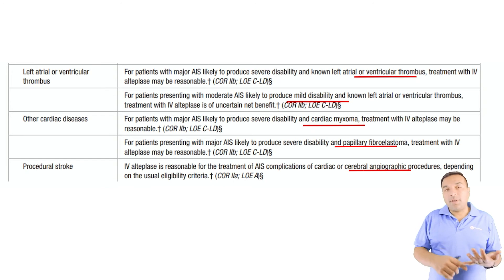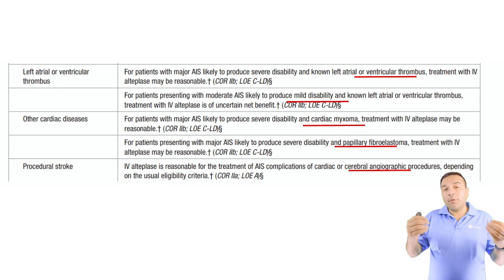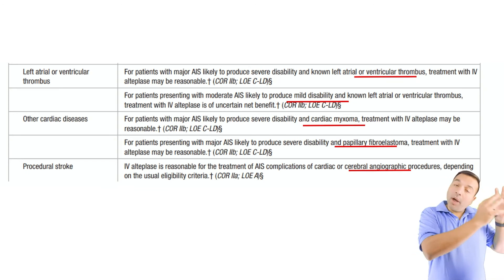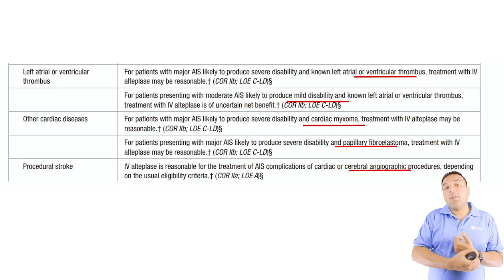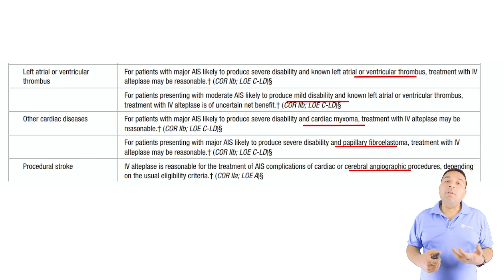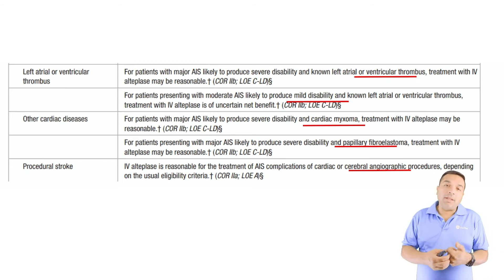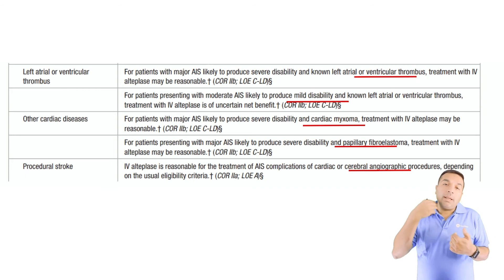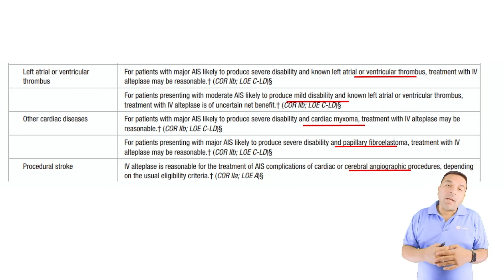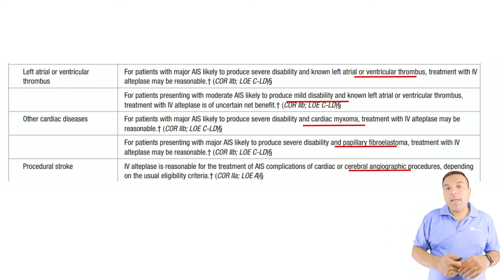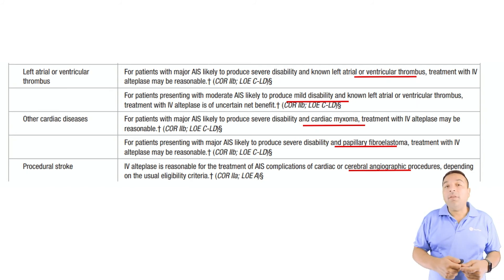For procedural strokes — for example during cerebral angiography or cardiac catheterization — even if the patient was heparinized for the procedure, I've given protamine and then given TPA. These patients can do very well. These are often posterior circulation strokes due to artery-to-artery embolism while the catheter moves through the aortic arch, causing vertigo, nystagmus, and ataxia that can be significantly disabling.